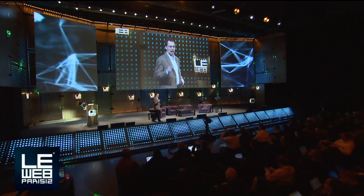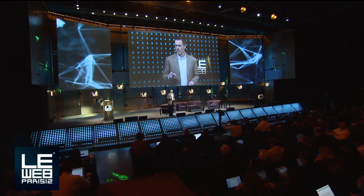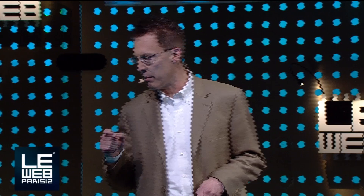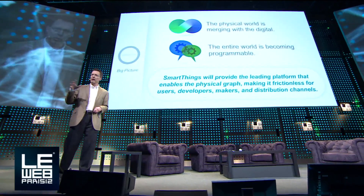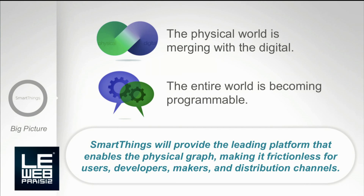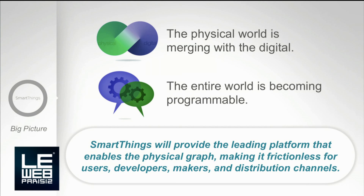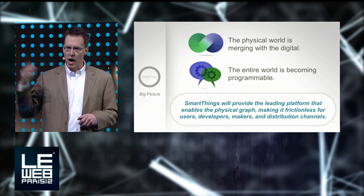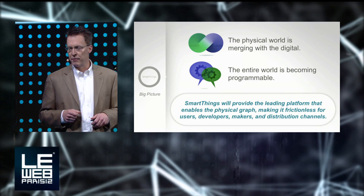My name is Jeff Huggins. I'm the CTO and one of the founders of SmartThings. I want to talk to you this morning about the idea of an open physical graph — about bringing the world online. We believe that the physical world is merging with the digital world, and that done correctly, this will create a virtual representation of all of our physical devices online.